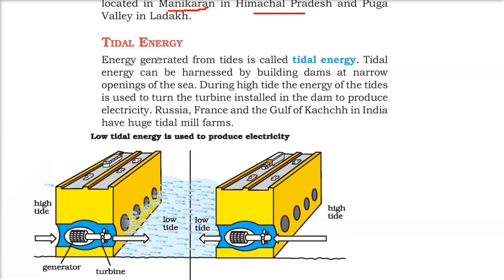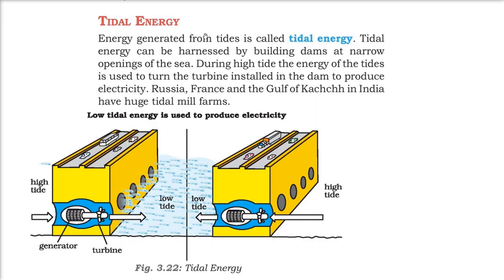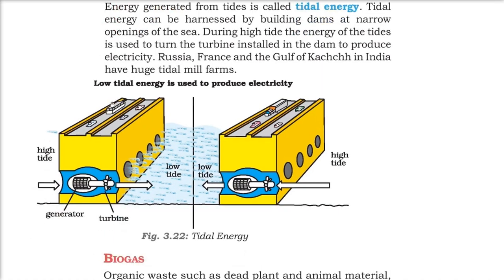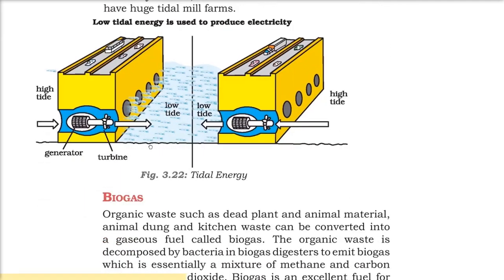Tidal energy is energy generated from tides, which carry a huge amount of energy due to the movement of large bodies of water. Tidal energy can be harnessed by building dams at narrow openings of the sea, where the speed of the waves can be captured. During high tide, the energy of the tide turns turbines installed in the dam to produce electricity. Russia, France, and the Gulf of Kachchh in India have huge tidal mill farms. When the tide comes in and when it recedes, the huge velocity of the water rotates these turbines to generate electricity.